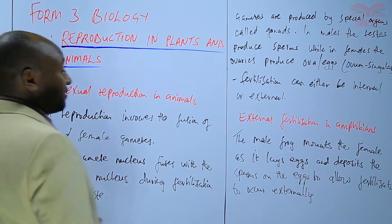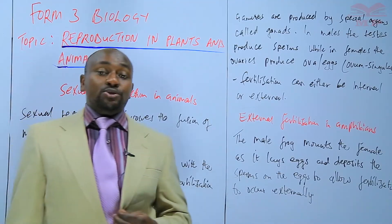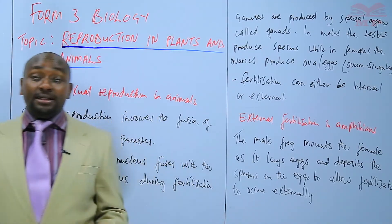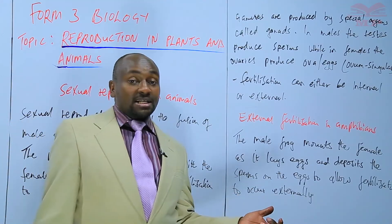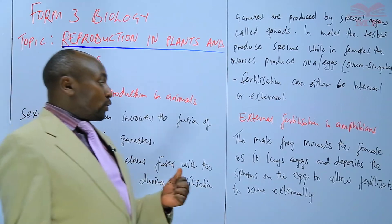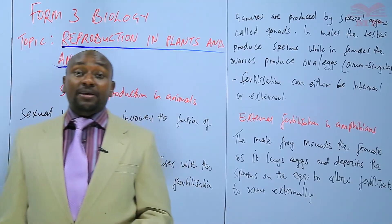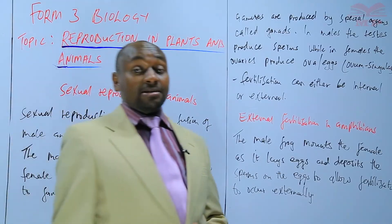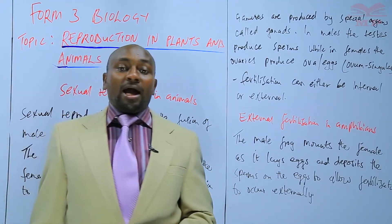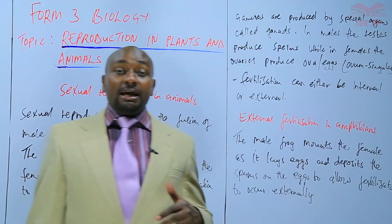The eggs laid by the female are usually in very large numbers to increase the chances of fertilization and also to increase the chances of survival, because some eggs may be attacked by bacteria or predators. Those eggs are also covered by a slimy jelly-like substance, which discourages predators from feeding on them, makes the eggs buoyant so they can float on water, and also attaches the eggs to water plants so they are not carried away by water currents.